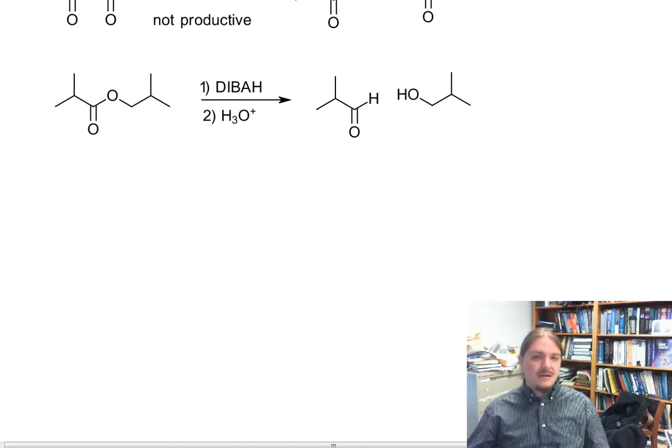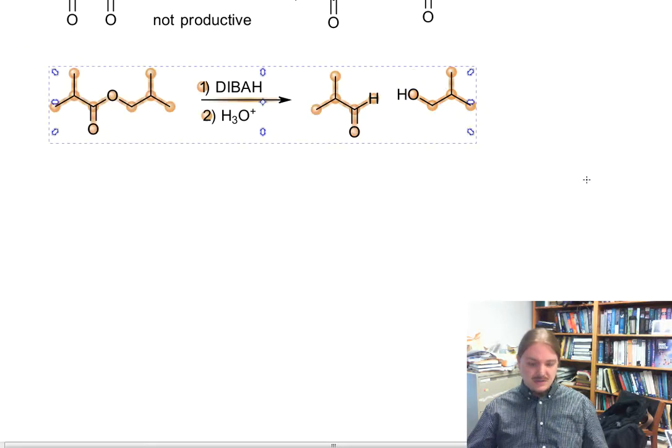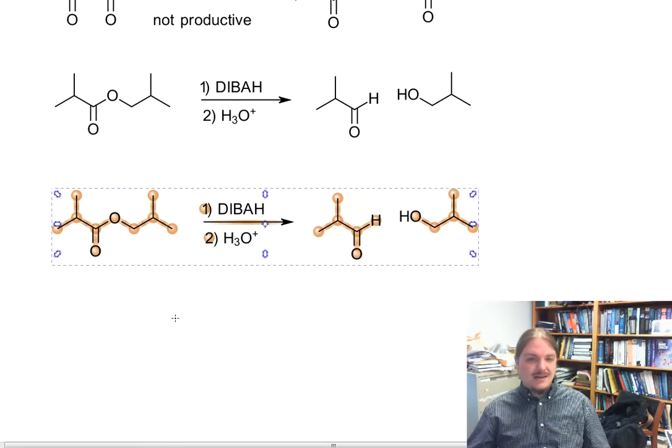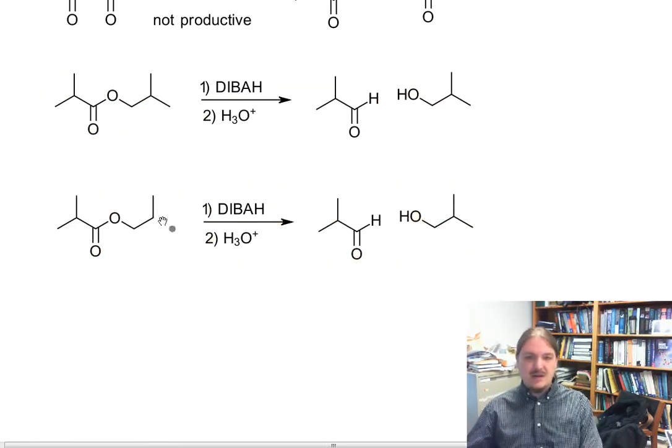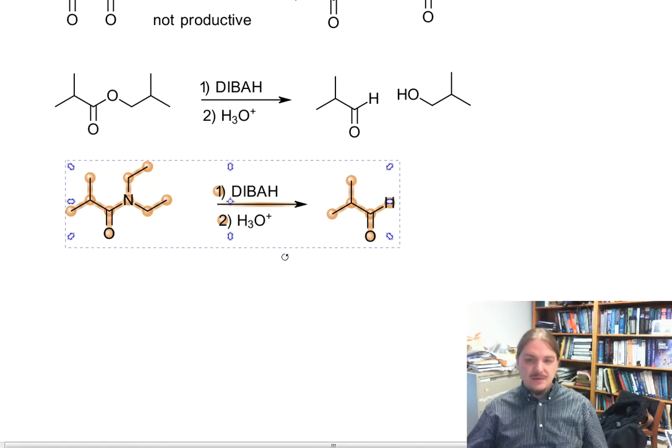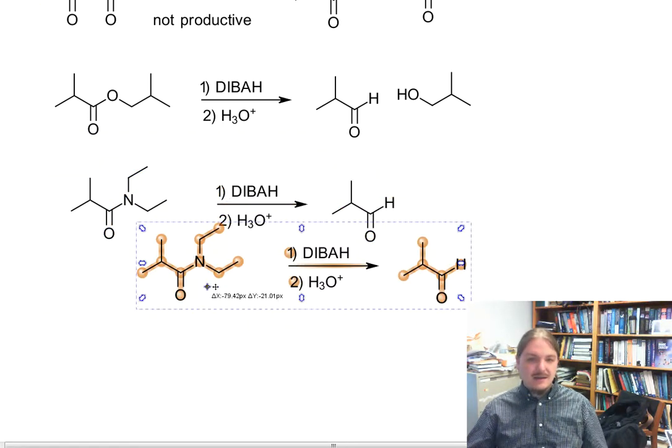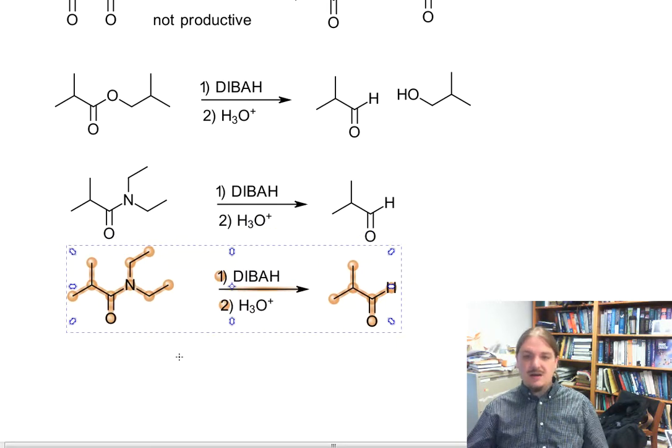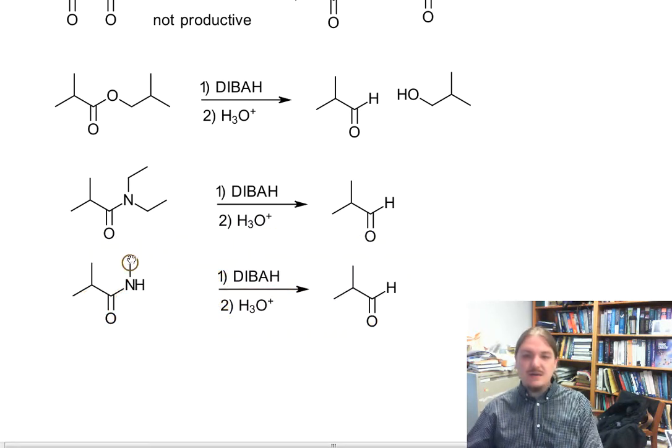Diisobutylaluminum hydride also reduces amides and nitriles to aldehydes as well. This amide can be reduced to the aldehyde, and in addition, nitrile can be reduced to the aldehyde.